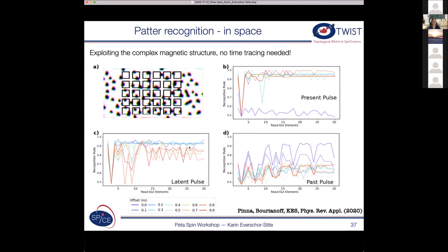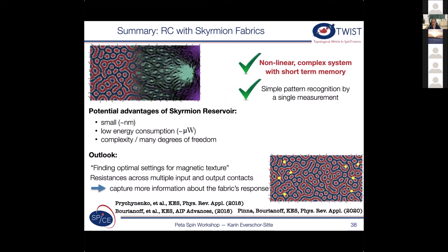So let me summarize this part. So what I've shown you is that you can use skyrmions for reservoir computing. And the nice thing is that they are small and you probably have a low energy consumption. They are very complex, which for this type of application is very good. And what we're working on currently is also to have more contacts and to find also more optimal settings.